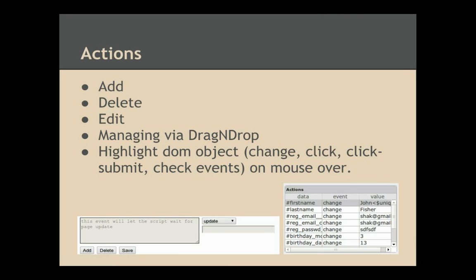Actions, as described previously, are portions of code that are injected one by one. You can add, delete, edit, and save an action using the buttons below the text area. You can also manage them via drag and drop, and highlight a page element by rolling the mouse over an actions data grid row. You can use the highlight option for change, click, click submit, and check action events — helpful for verifying that a selector is correct.